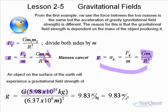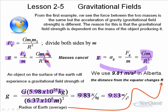An object on the Earth experiences a gravitational field strength of g = G·M1 / R², using big G, the mass of the Earth, and the average radius of the Earth. This gives approximately 9.83 Newtons per kilogram or 9.83 meters per second squared — an average for the entire Earth. In different parts, such as Alberta in Canada, we're closer to the center of the Earth, so we use 9.81 m/s². The distance from the equator changes R, and therefore g can be slightly different depending on your location.